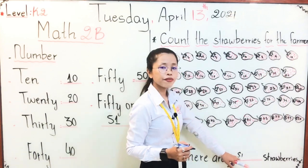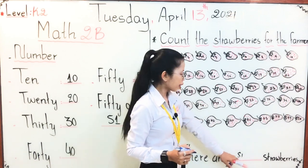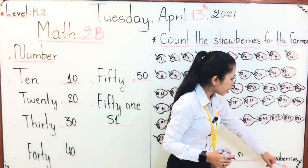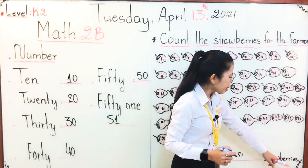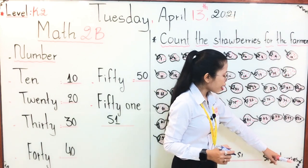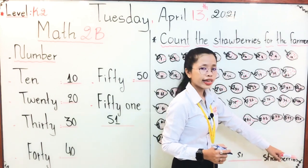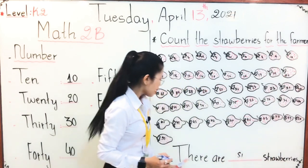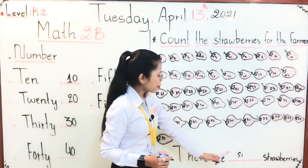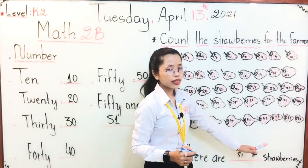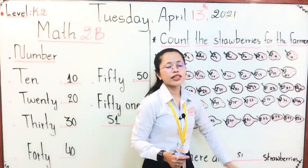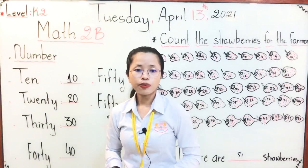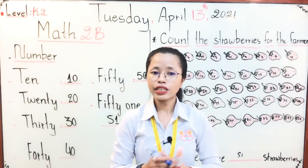All together, everyone: 'There are 51 strawberries.' By the whole sentence: T-H-E-R-E, A-R-E, and 51, S-T-R-A-W-B-E-R-R-I-E-S. There are 51 strawberries.